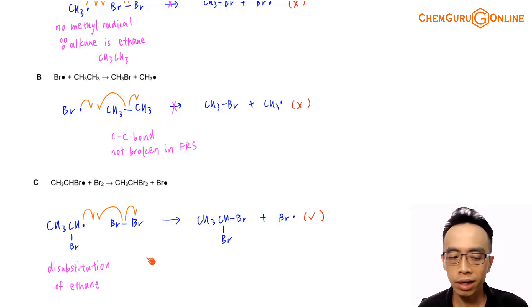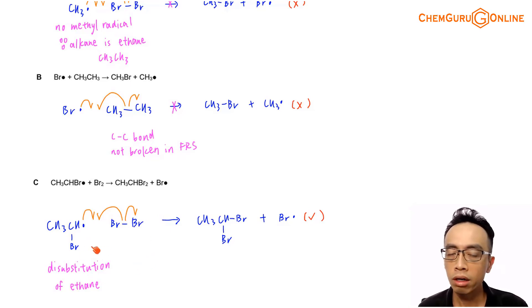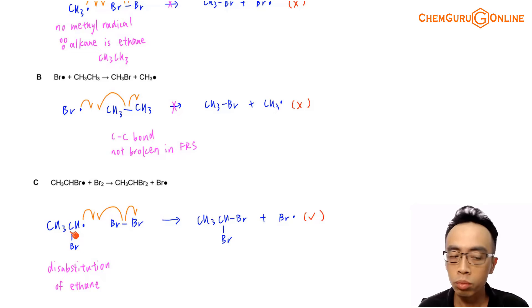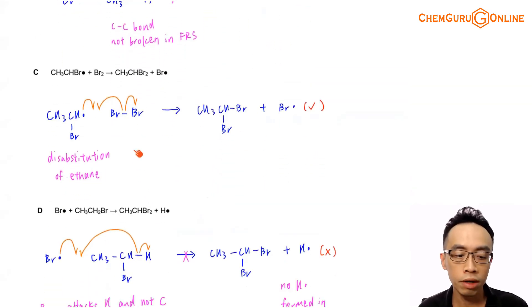This is involving the second substitution of your ethane — from bromoethane to dibromoethane — and it is a possible propagation step.